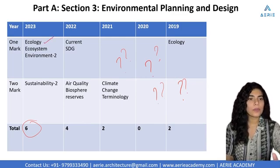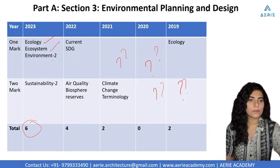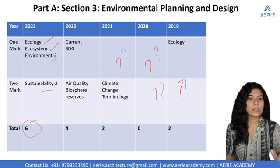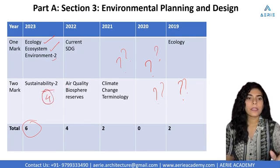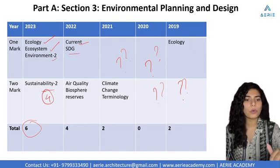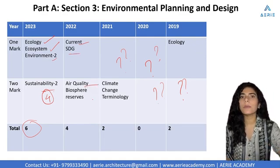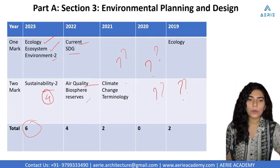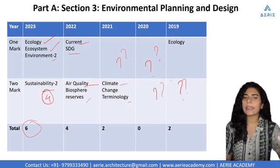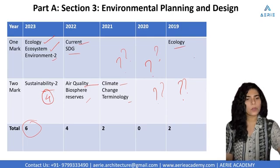One question came on ecology and ecosystem; environment had no question; then sustainability had two questions worth four marks. Any current affairs, SDG — questions on sustainable development goals — air quality, biosphere reserve, climate change terminology, and any ecology terminology also appeared.